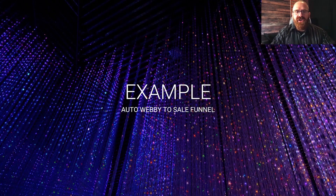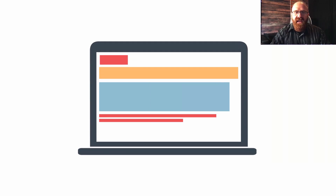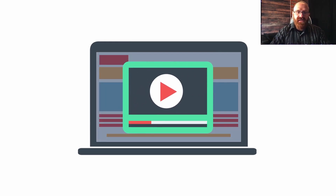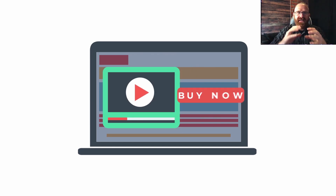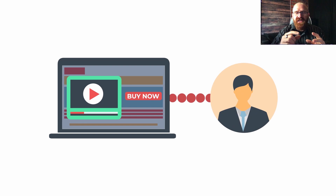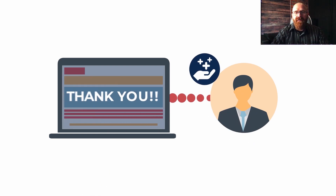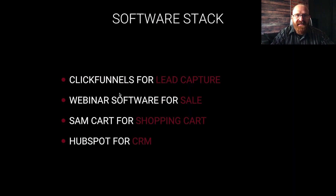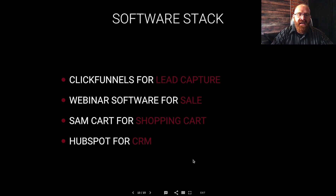Let's look at a functional example. This is going to be an auto-webinar to sales funnel — essentially an automated webinar where the product is sold through the webinar itself, and the prospect gets so much value that they just click the buy button and make a purchase as a result of viewing it. The software used in this example: ClickFunnels for lead capture and webinar registration, webinar software for the sales aspect, a shopping cart for processing the sale, and HubSpot as a way to record all the data.